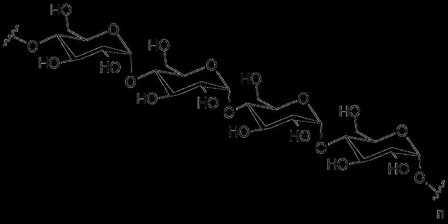Pectins are a family of complex polysaccharides that contain 1,4-linked alpha-D-galactosyluronic acid residues. They are present in most primary cell walls and in the non-woody parts of terrestrial plants.